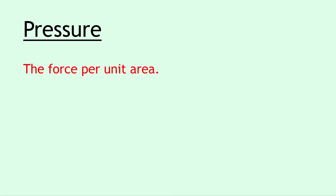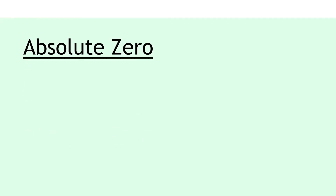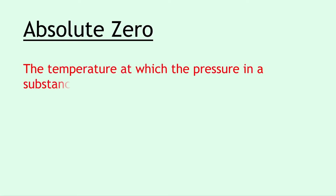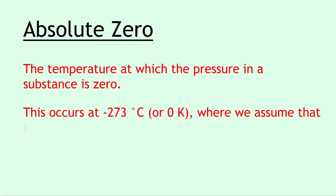Next we have pressure. Pressure is defined as the force per unit area, and this just comes from the equation. Moving on, we have absolute zero. Absolute zero is defined as the temperature at which the pressure in a substance is zero. This occurs at minus 273 degrees Celsius, or zero Kelvin on the Kelvin scale, where we assume that the average kinetic energy of the particles is zero.